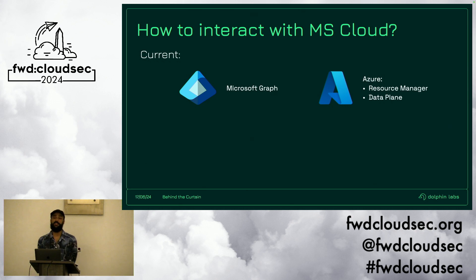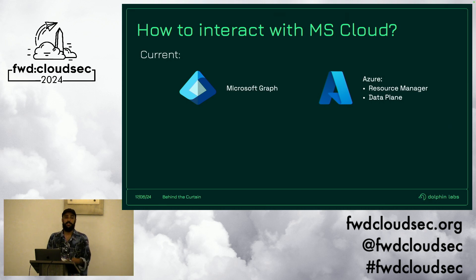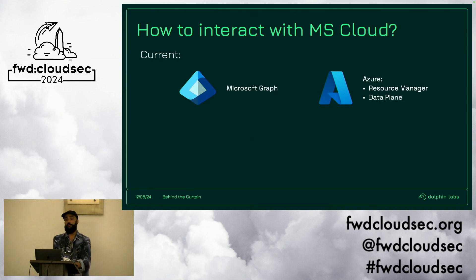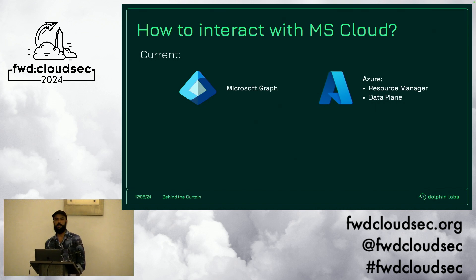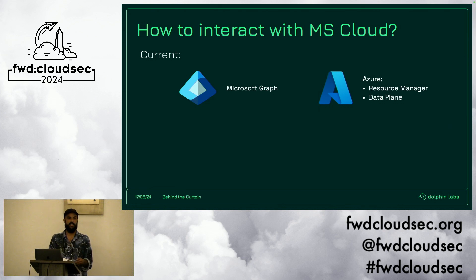On the Azure side, things are broken into two main categories. We've got the resource manager APIs — for control plane actions such as creating, deleting, and updating a resource, like creating a storage account. We've also got the data plane APIs for interacting with the actual data stored within services, such as getting data from a storage blob. But with services as varied and deeply integrated into organizations, it gets challenging to deprecate and retire old interfaces. So we've got a few legacy APIs still knocking around.